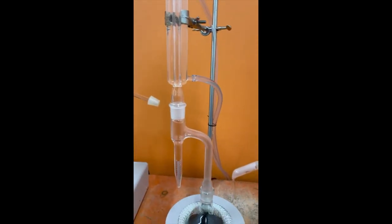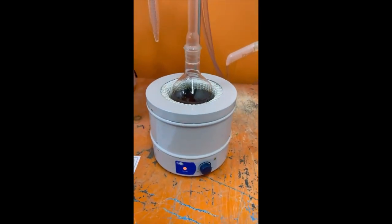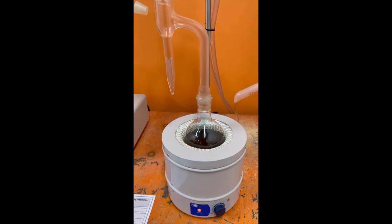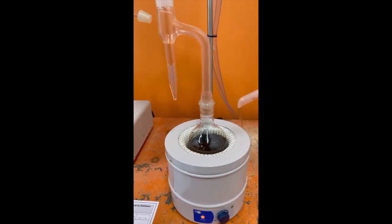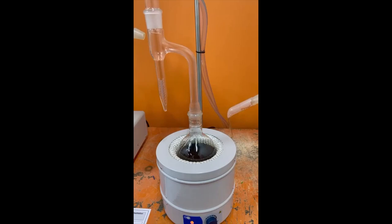And apply heat to the system. Adjusting the rate of boiling so that the condensed distillate discharges from the condenser at the rate of 2 to 5 drops per second.